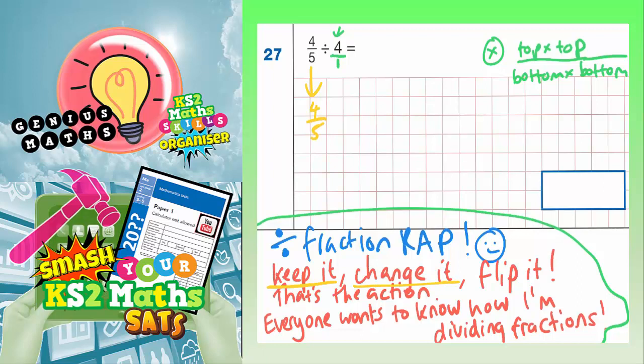The second bit is change it. This refers to changing the symbol. So change the divide for a times. And that's because we already know how to do a times. We've said up here, times is top times top, bottom times bottom. So we change the divide for a times.